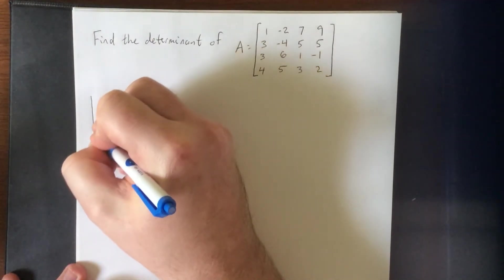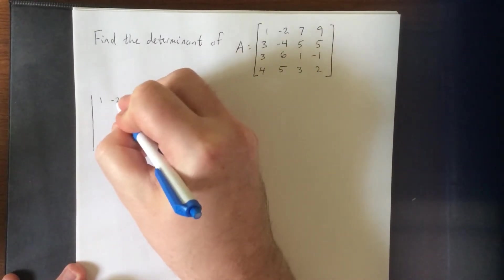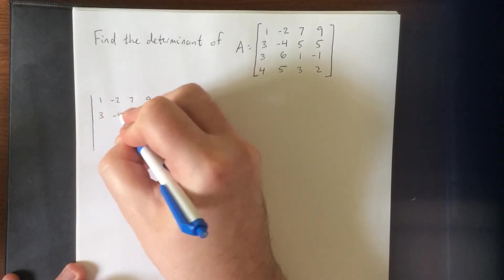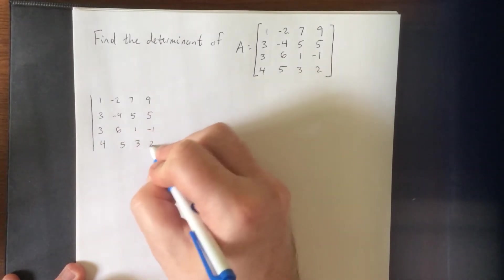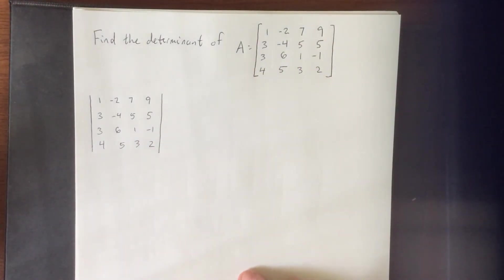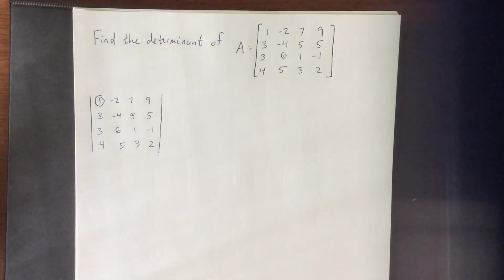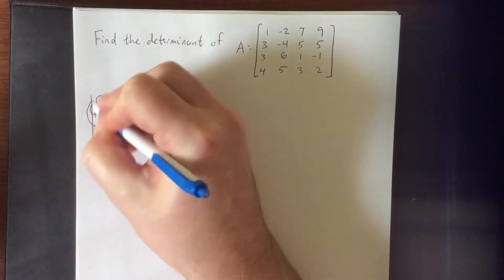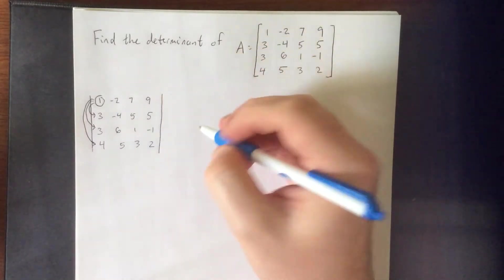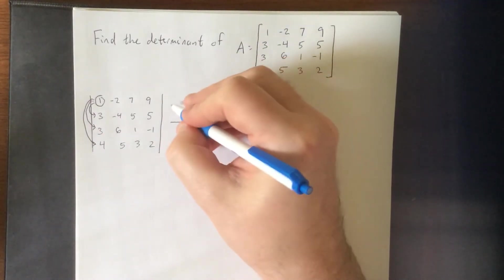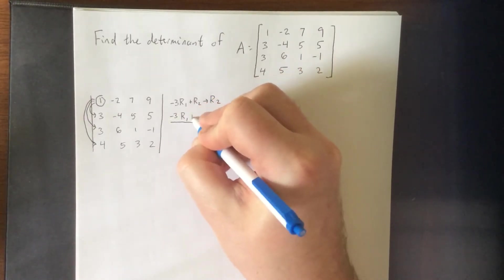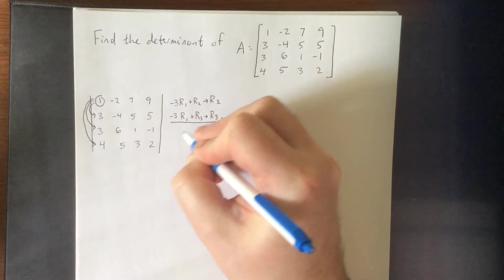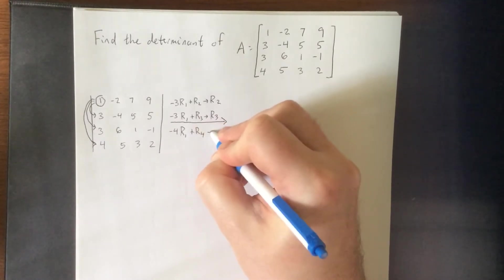Usually you'd want to find either a positive one or a negative one somewhere in your matrix, then use that to start getting zeros either above and below it using elementary row operations. So for this determinant, first I'd like to use proper determinant notation — two vertical bars instead of matrix bars. I'm going to use the one in the 1,1 entry to zero out the three entries below it, then do a cofactor expansion down the first column. The three operations will be: -3 times row 1 added to row 2 (new row 2), -3 times row 1 added to row 3 (new row 3), and -4 times row 1 added to row 4 (new row 4).